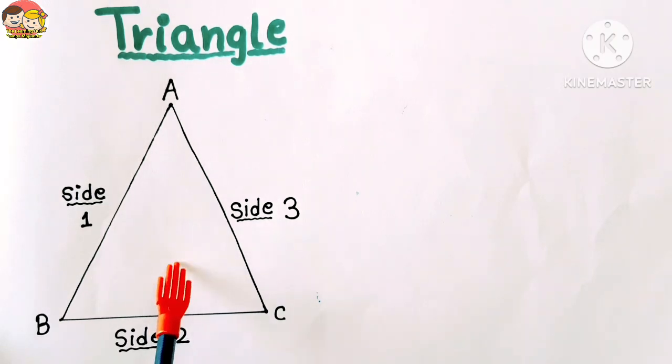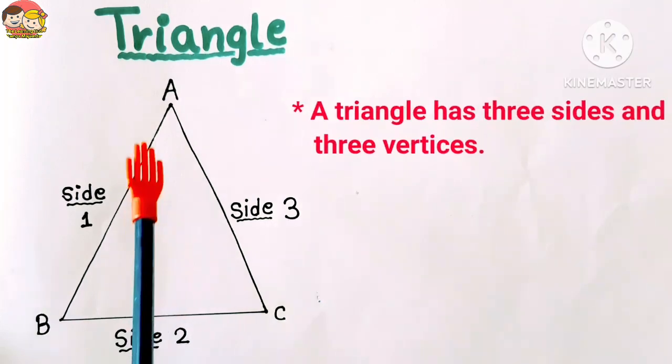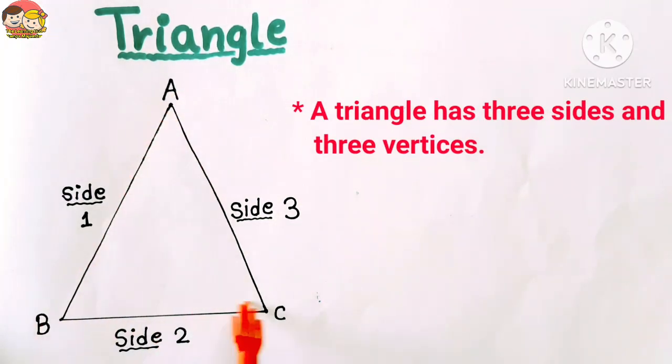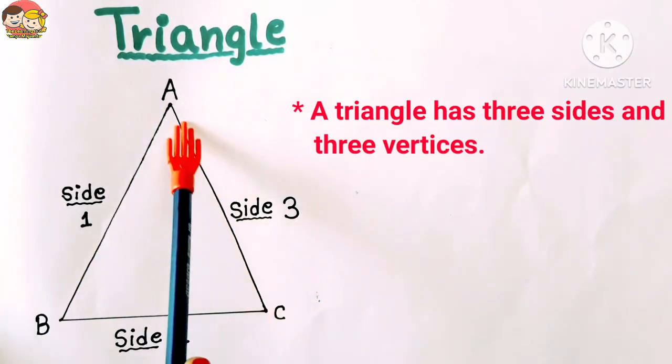Look at this figure. This figure represents a triangle. So this is a triangle shape. A triangle has three sides: one side, two sides, and three sides.